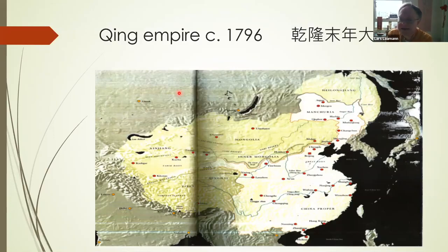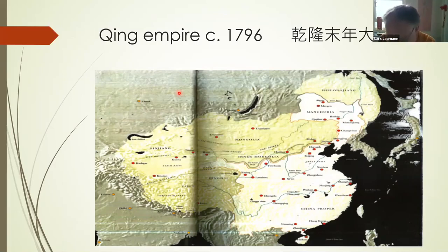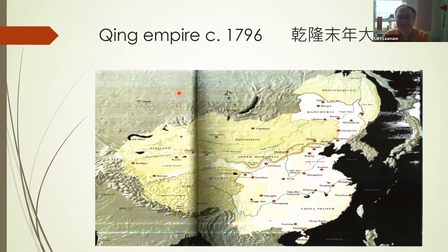How we get to the Qing is connected to the person of a single individual who actually created the term 'Manchu.' If you've ever heard of Nurhachi or Nurgachi, as he can also be pronounced, you usually get the impression that this is a Manchu nationalist who tries to break free from the oppression of the Ming — but there are a few caveats.